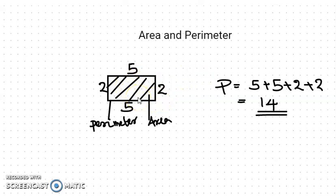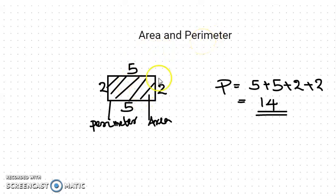How can we find the area of a polygon? For that, we can use different formulas. For perimeter also, we can find by formulas. In the case of a rectangle or a square, how can we find the perimeter?